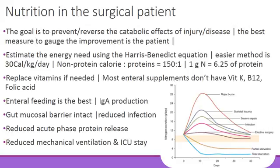The goal of nutrition is to prevent or reverse the catabolic effects of injury and disease. The best measure of how well you are feeding a patient is improvement of the patient. To calculate energy requirement, you can use the Harris-Benedict equation — separate for males and females — but an easier method used even in ICUs is 30 kilocalories per kilogram per day. Keep the non-protein calorie to protein ratio at 150:1, and remember that 1 gram of nitrogen equals 6.25 grams of protein.